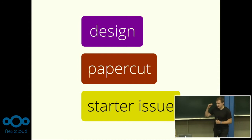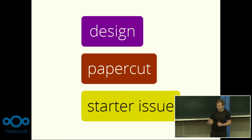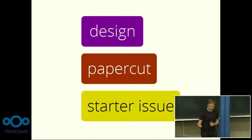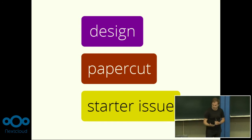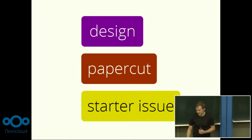If you want to get involved, there are basically three labels you can look at. One is the design label that exists in the server repository and in many of the apps, and it basically covers all the different design, front end, and all kinds of UX and UI issues and features. If you're an app developer, please add the design label to your issue tracker and just tag design issues as design, so that people can see that design help is needed.